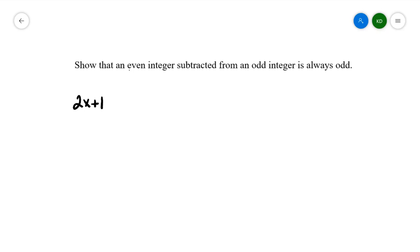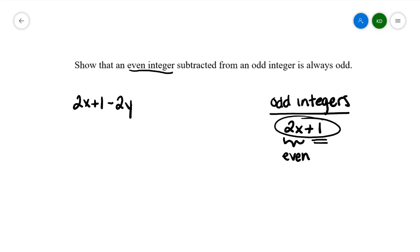What I'm doing is I'm subtracting an even integer from it. So I'm going to subtract 2y. And again, I'm going to use a different variable to represent that I have two different numbers here. What I want to show is that this result is always going to be odd. Remember that odd integers always take this general form 2x plus 1. And even breaking that down further, remember that 2x is an even integer, and then by adding 1 you're making it odd.